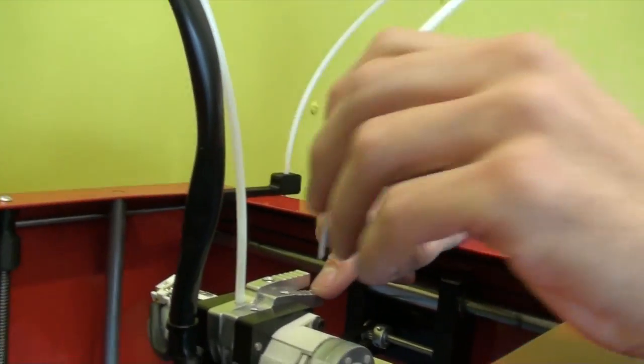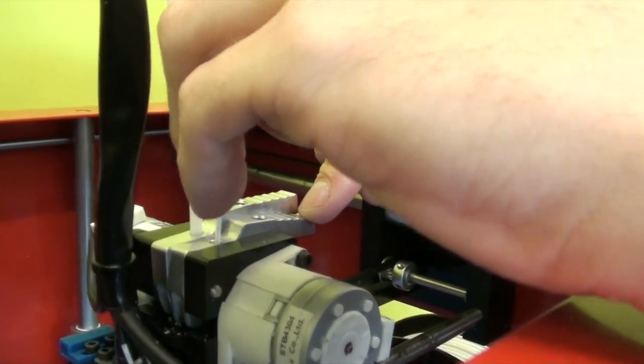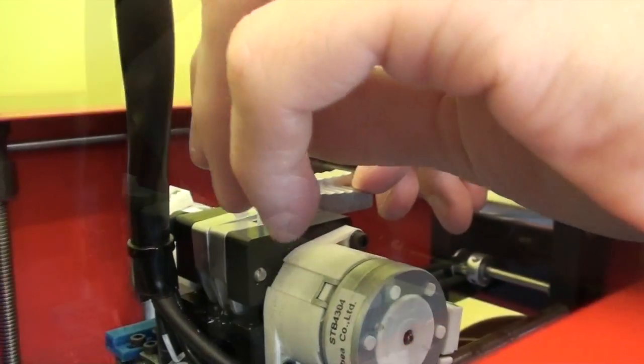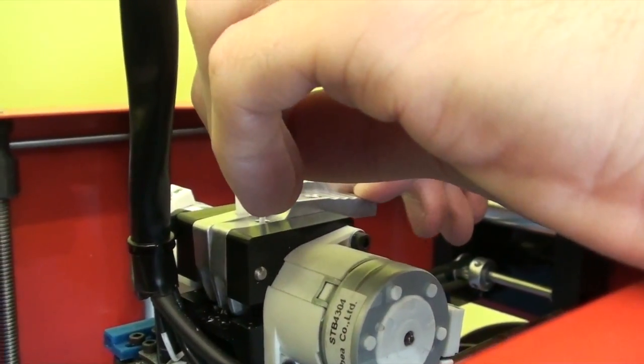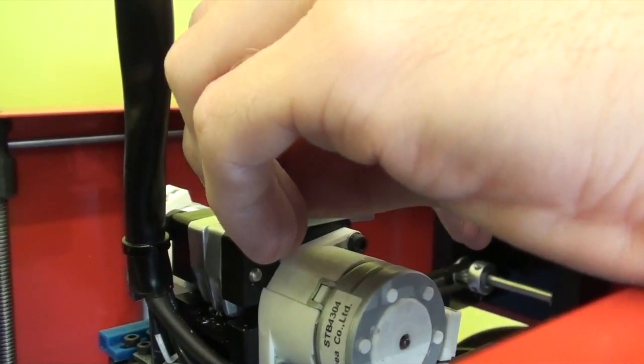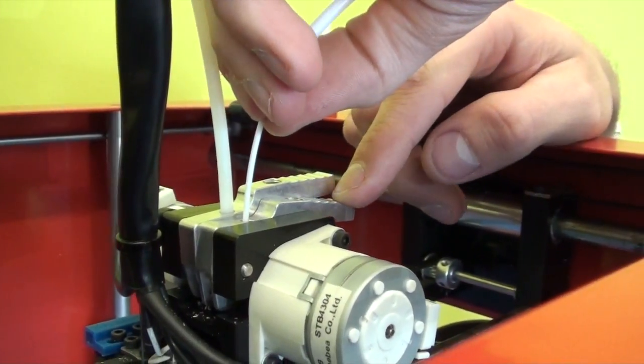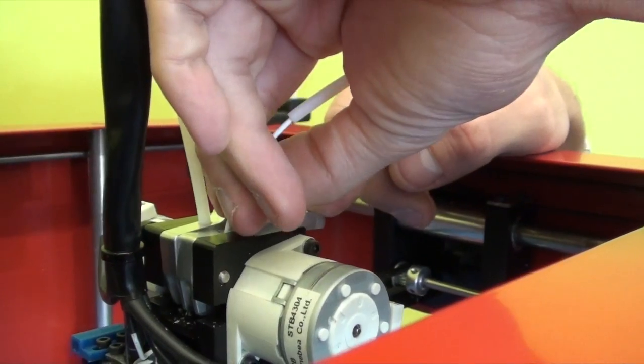Now I'm going to press down this section again. Now the filament's in the hole, I'm just going to push this down, whilst at the same time pushing down this section here. And the filament should start to come out.